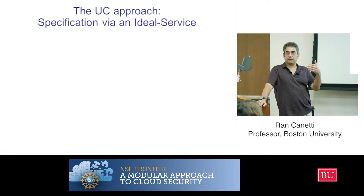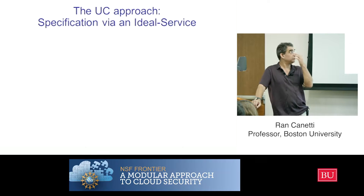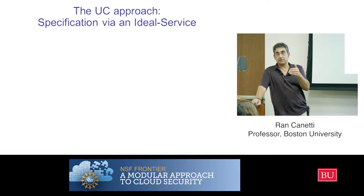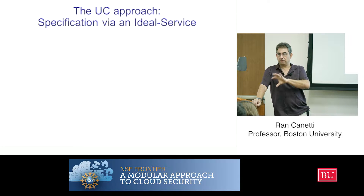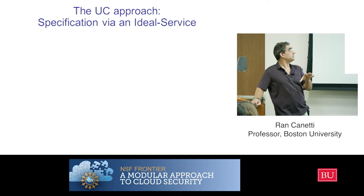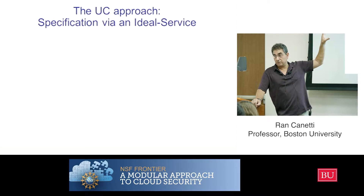The approach to specifying security properties, which you will also learn to use for modularity, is to specify properties in a slightly indirect way. Instead of listing the properties that you want, you're going to specify the properties from your task, from your protocol, from your system via an ideal service.